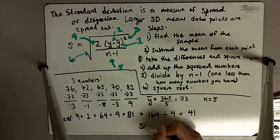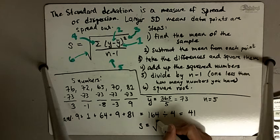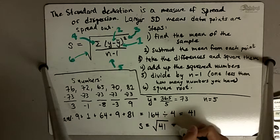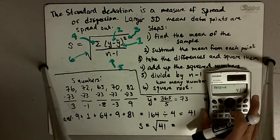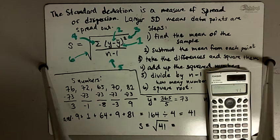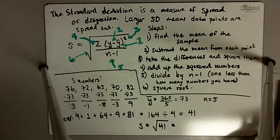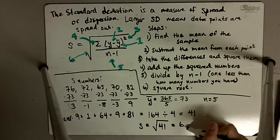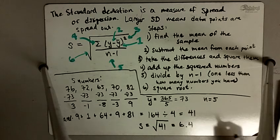And the last step is then to take the square root of 41. So my standard deviation, S, is going to be the square root of 41. And so square root of 41 is going to be about 6.4.